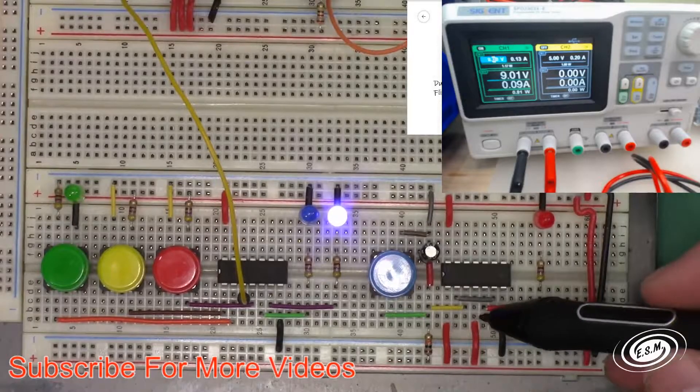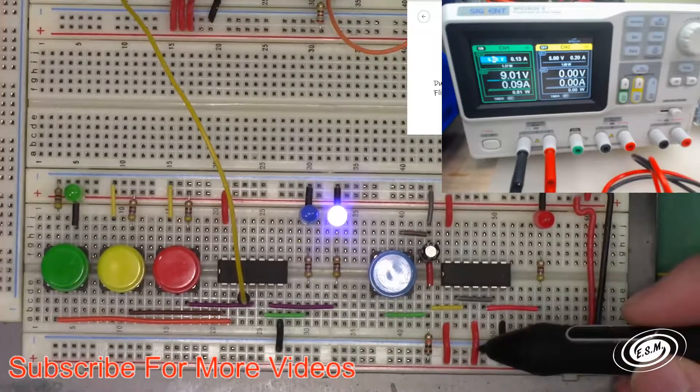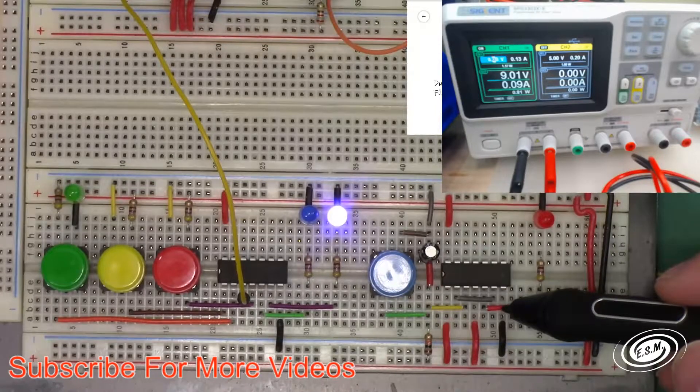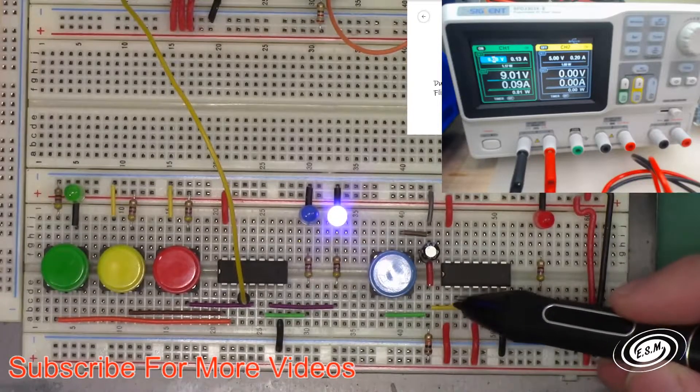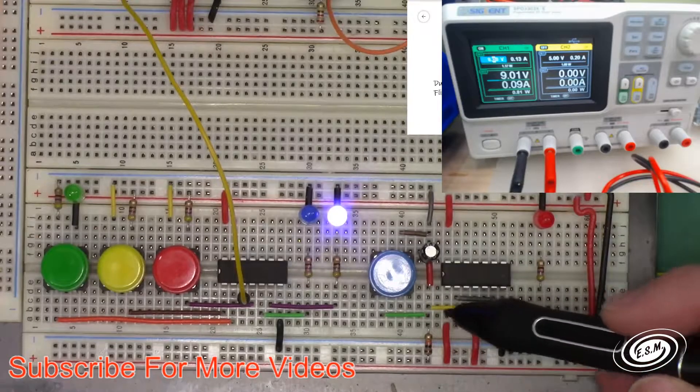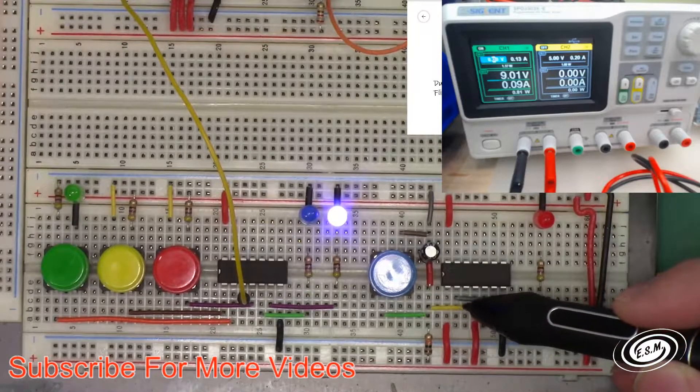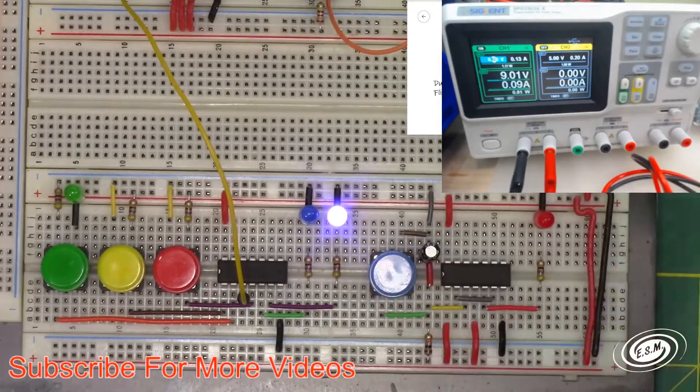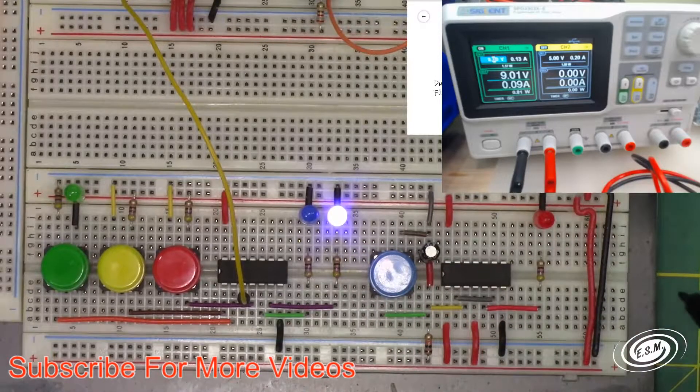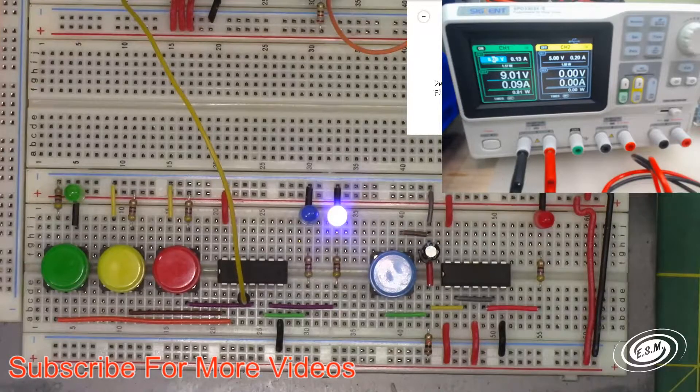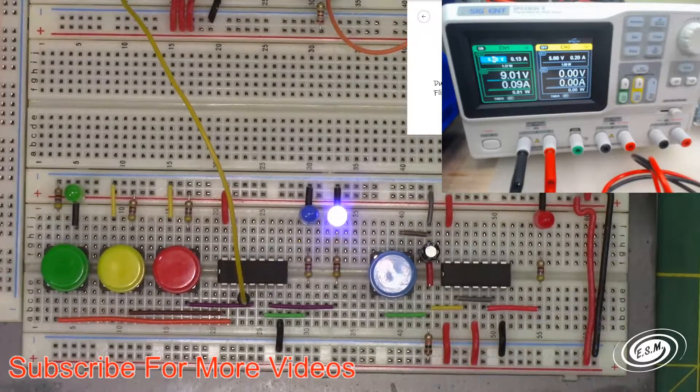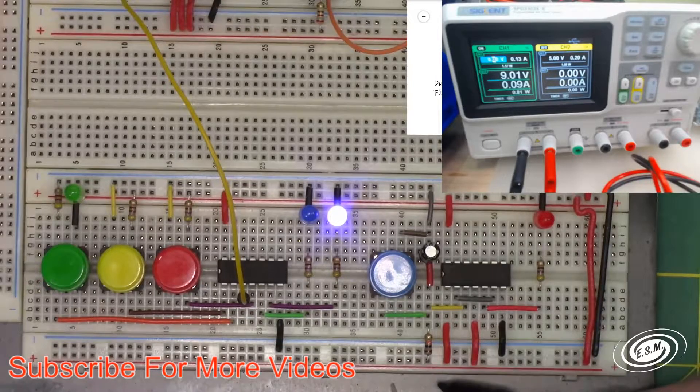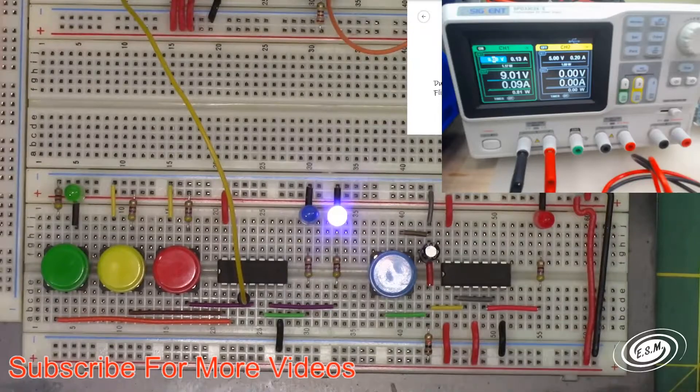I basically tied the preset and clear high. And then I tied the Q not output back to the data D. And then I put that RC circuit with the switch into the clock circuit. And it is a 0.47 microfarad capacitor, electrolytic, and a 10k ohm resistor.